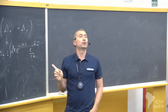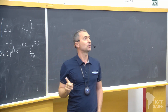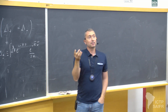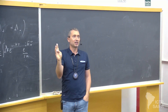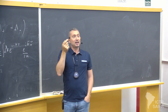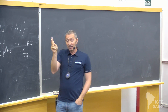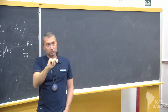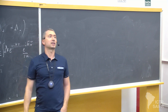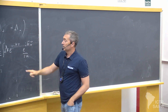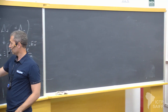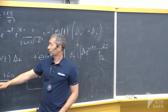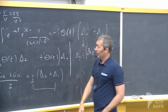Whereas in particle physics, people use rather this other prescription. And you might have wondered — this other prescription has a piece which is acausal, because it has this advanced piece. So how come it makes sense in particle physics to use this other prescription? So this is one of the things that should be taught in quantum field theory courses, besides the fact that one-loop diagrams contain a classical piece.